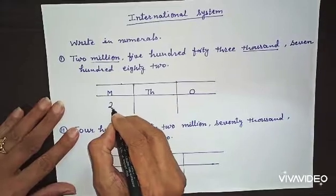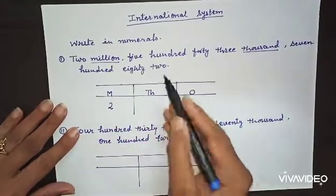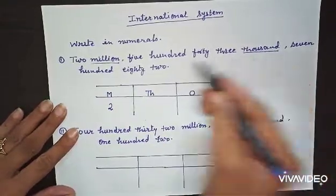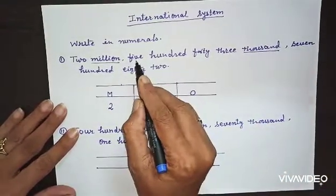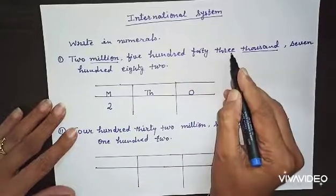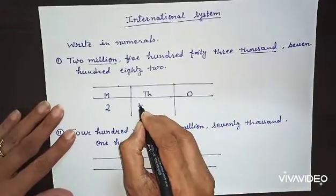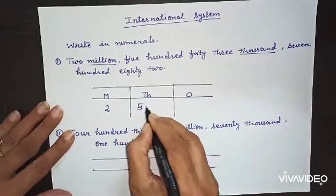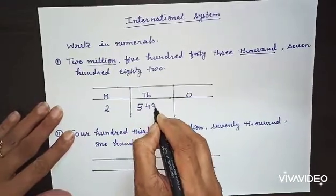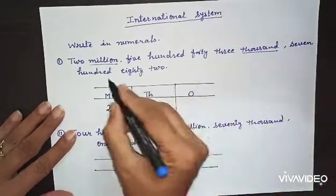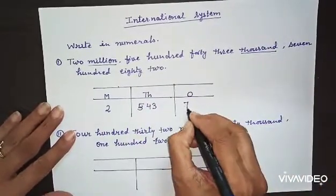Two million. Read next: five hundred forty three thousand. Again we will read five hundred forty three, so we will write here down of Th: five hundred forty three thousand. Now next, seven hundred eighty two, seven hundred eighty two.